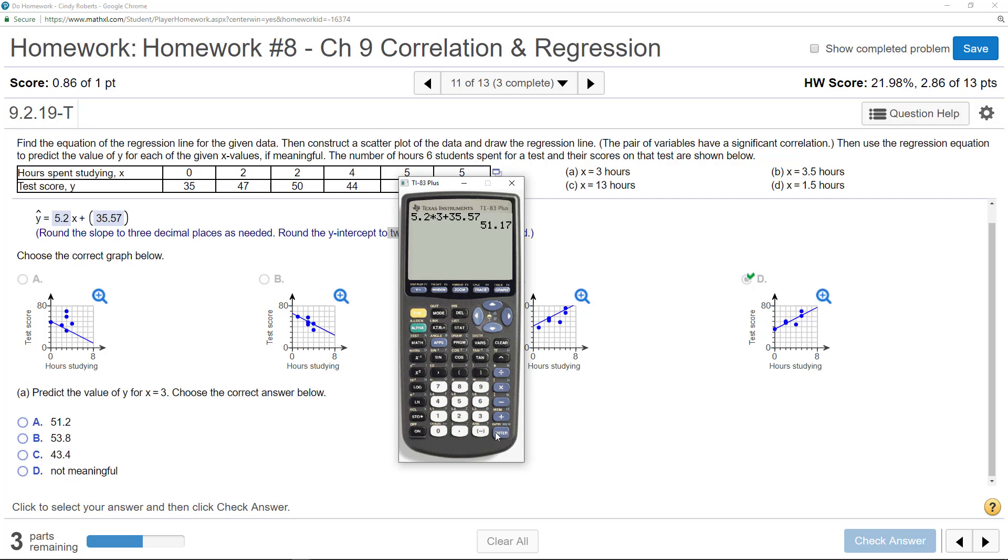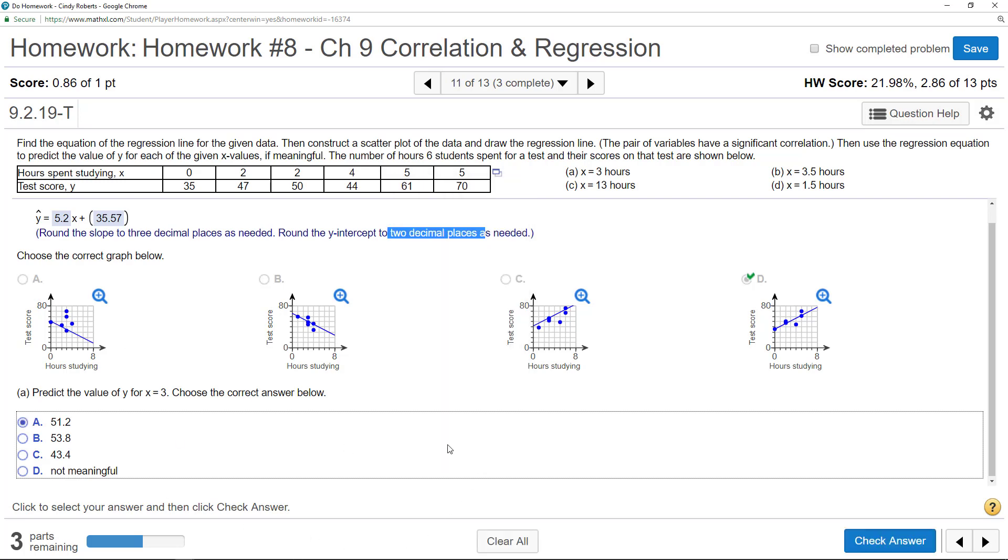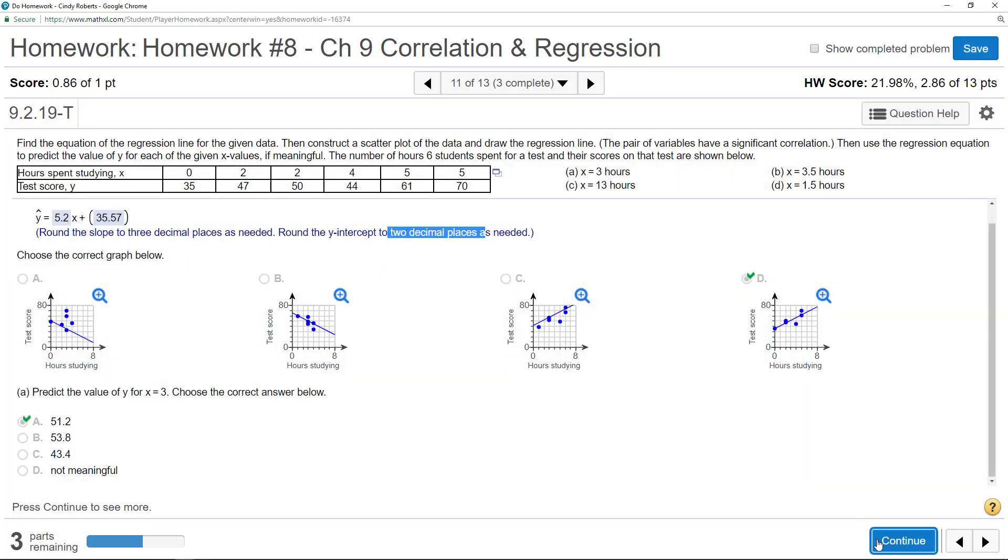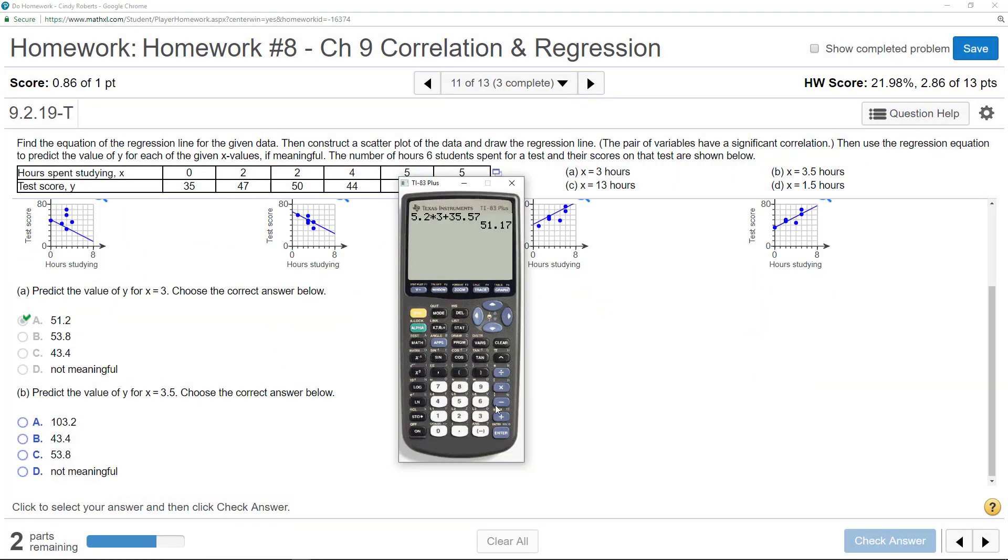And I get 51.2. Check my answers. Good job. Now they want to see, can you do it again? Probably in your calculators you could just move up and change the 3 to a 3.5. So times 3.5 plus 35.57.